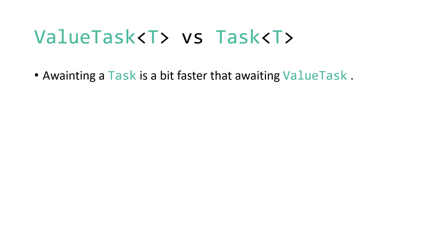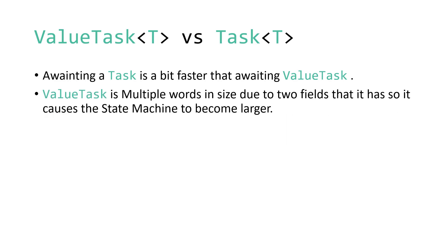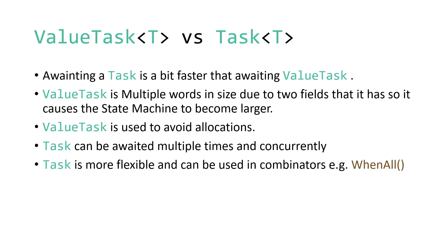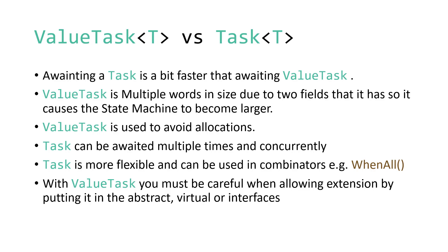Awaiting a Task is a bit faster than awaiting a ValueTask — it's a matter of nanoseconds, but still faster. ValueTask is multiple words in size due to its two fields, which causes the state machine to become larger. ValueTask is used to avoid memory allocations. A Task can be awaited multiple times and concurrently, whereas this is not the case with ValueTask. Task is more flexible and can be used in combinators like WhenAll. With ValueTask you must be careful when allowing extension via abstract, virtual, or interface methods, because you don't know what the hot path looks like in those implementations.